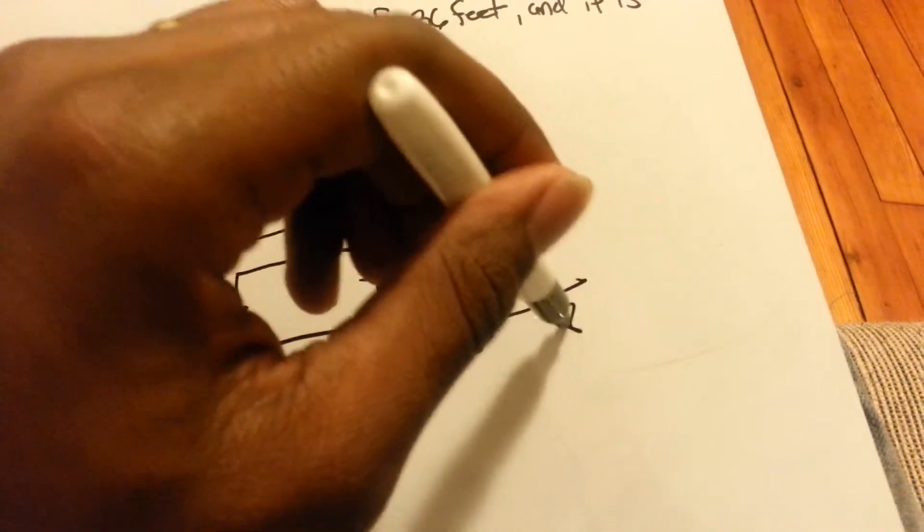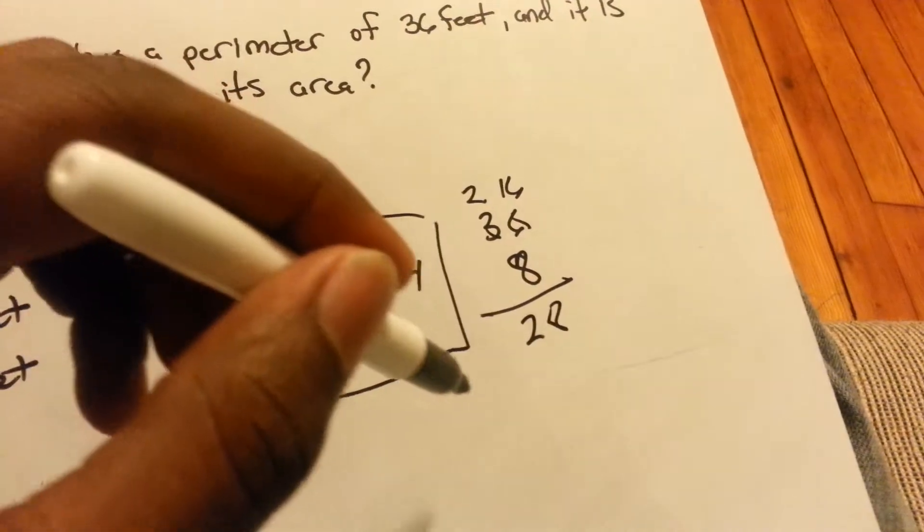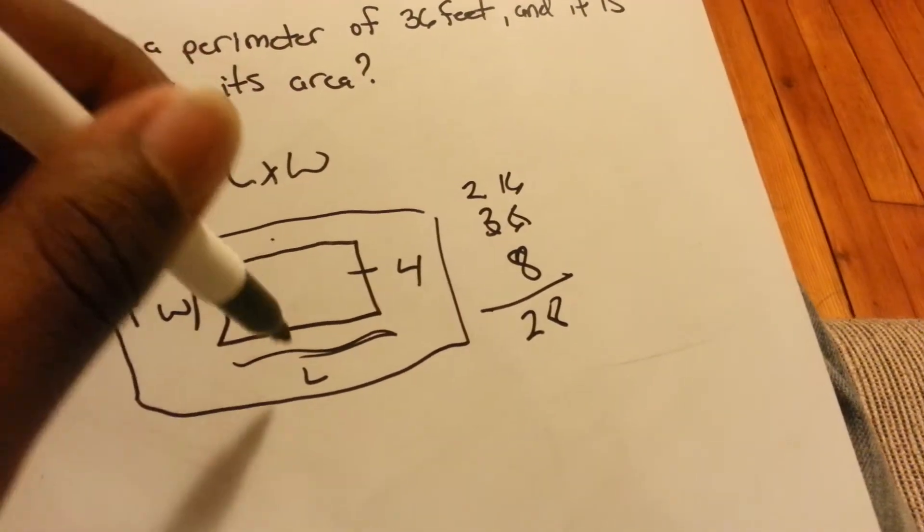8 minus 6 is 2. Bring down that 2, 28 feet. 28 feet is the total for these two sides.